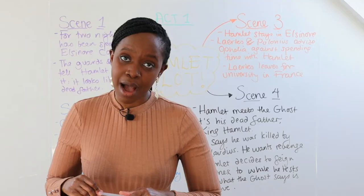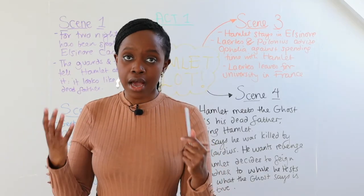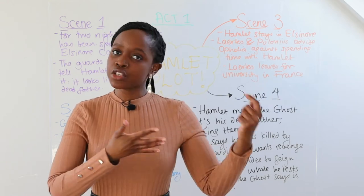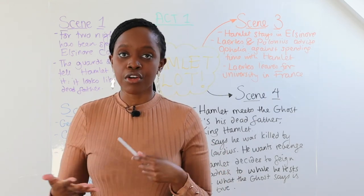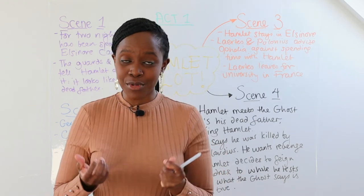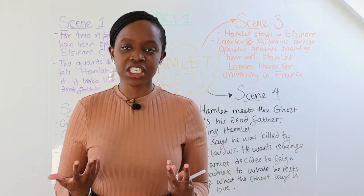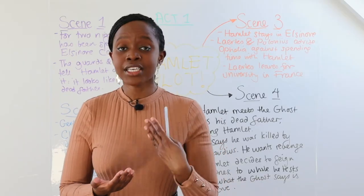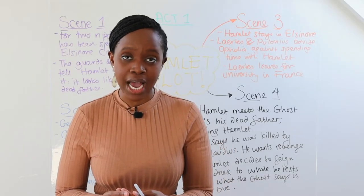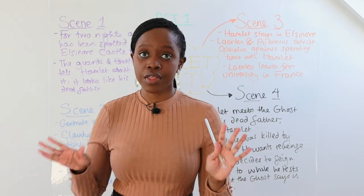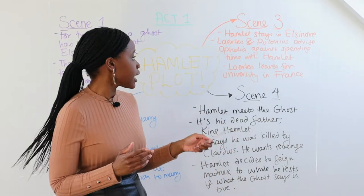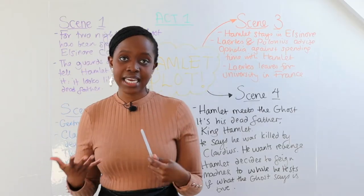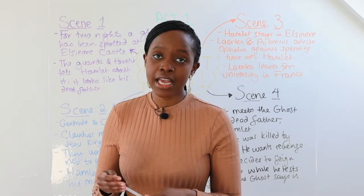Laertes and Polonius believe Hamlet will probably be married off to another princess. They don't want Ophelia to lose her innocence to Hamlet, because they believe he'll just use her and marry a princess anyway. They tell her she's not allowed to talk to Hamlet anymore and must cut off links with him. Separately, Laertes decides to leave for university in France, whilst Hamlet stays in Elsinore.